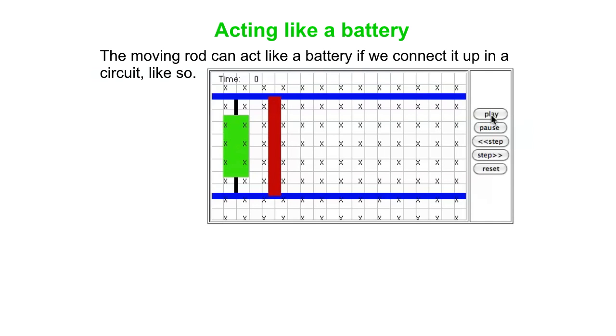So what we're going to do here is allow the rod to move to the right, and we're going to think about what the direction is of the induced current in this loop as the rod goes to the right.